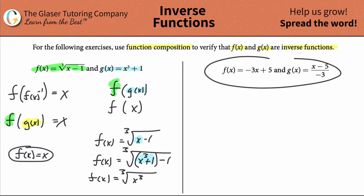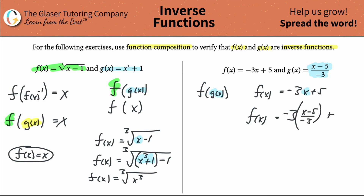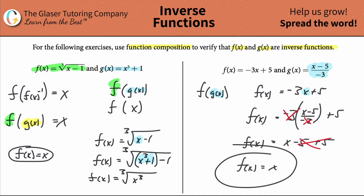So now let's run through this next example and do the same thing. Let's do f of g of x. Start by writing your f of x function out: f of x is equal to negative three x plus five. Then we take our g of x function and plug it in for x. So f of x equals negative three times (x minus five over negative three) plus five. Notice we have a double negative, and both threes cancel. So now I'm left with f of x equals x minus five plus five — and the five and negative five cancel — giving us x. That just proves it.